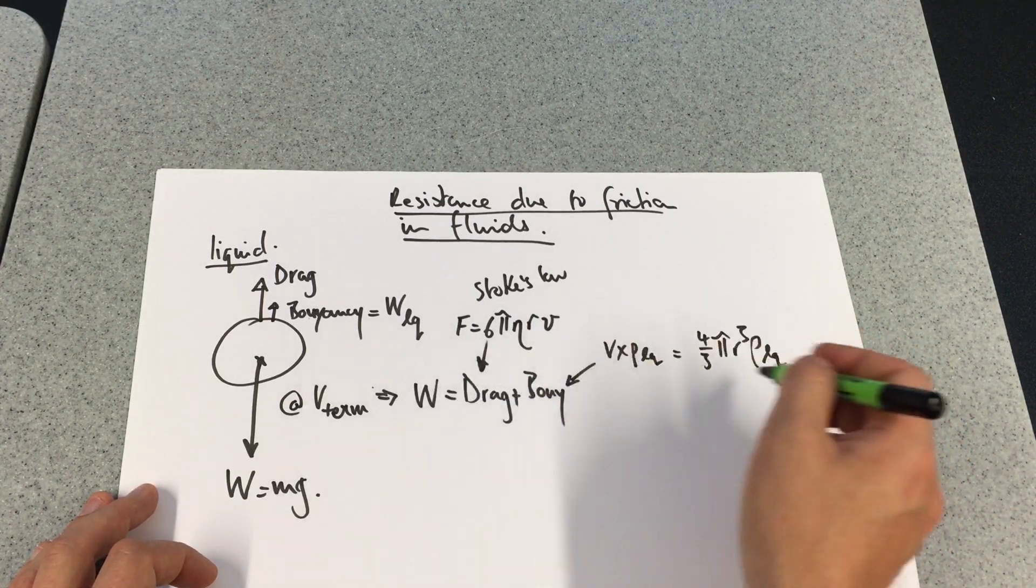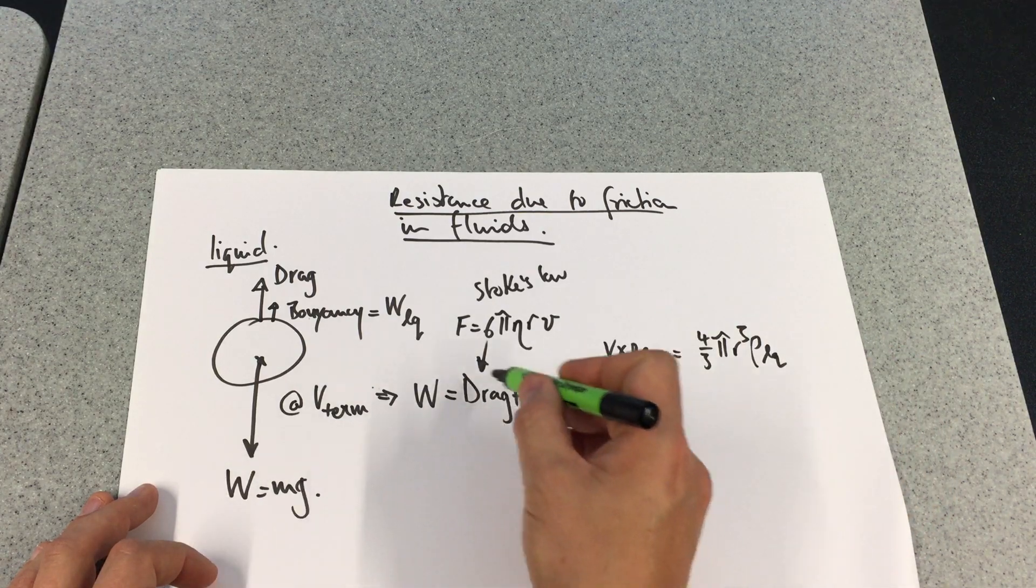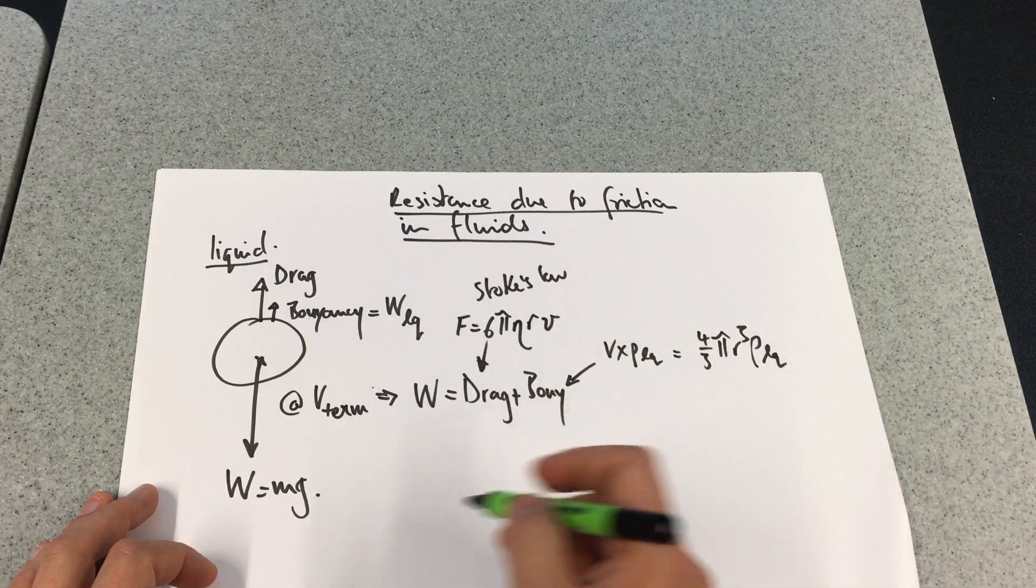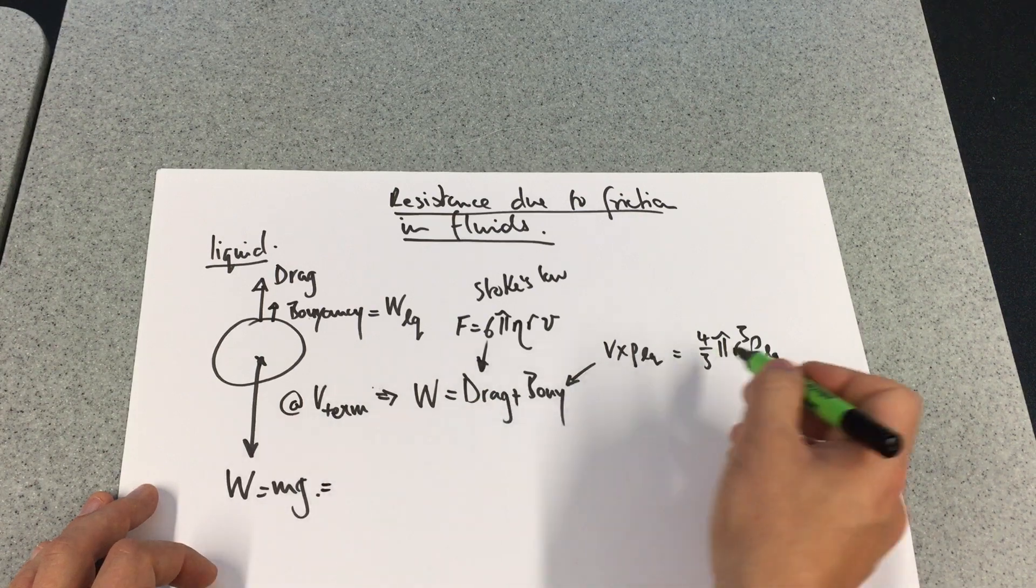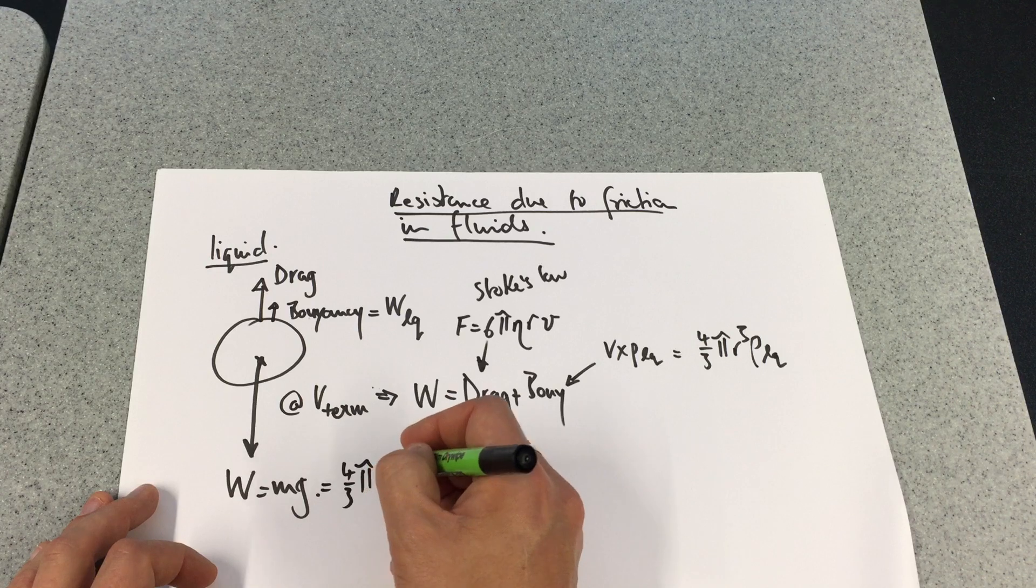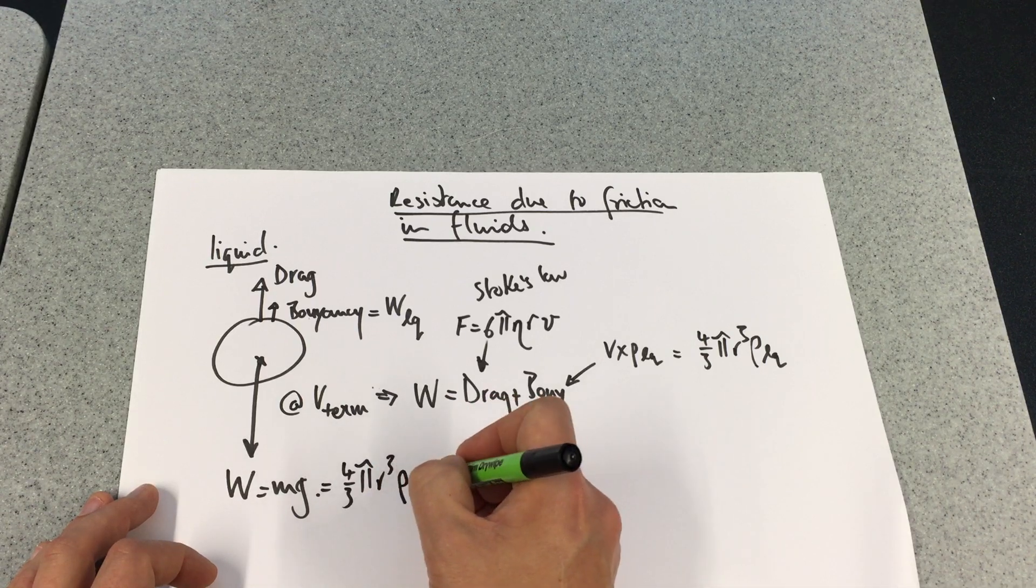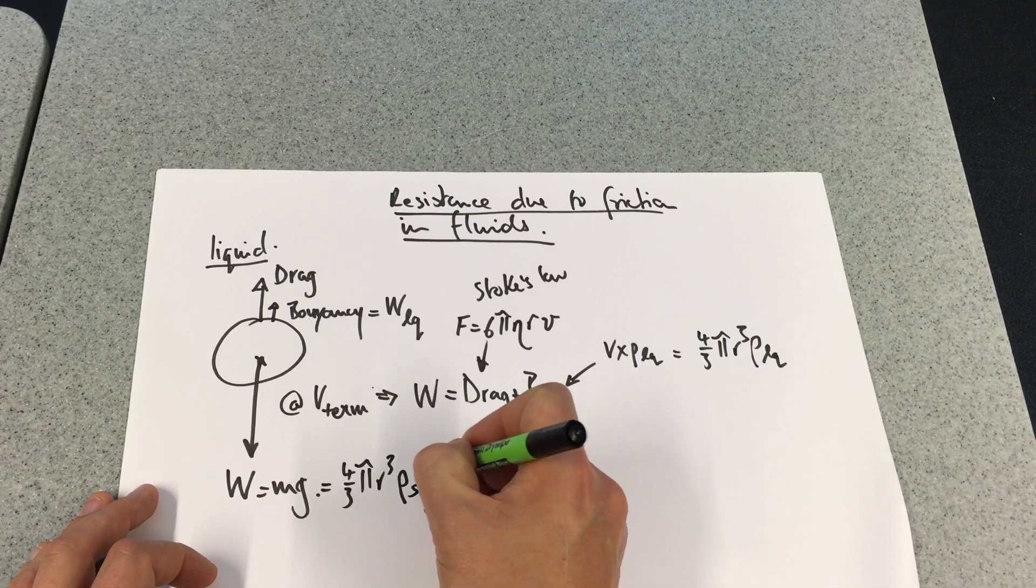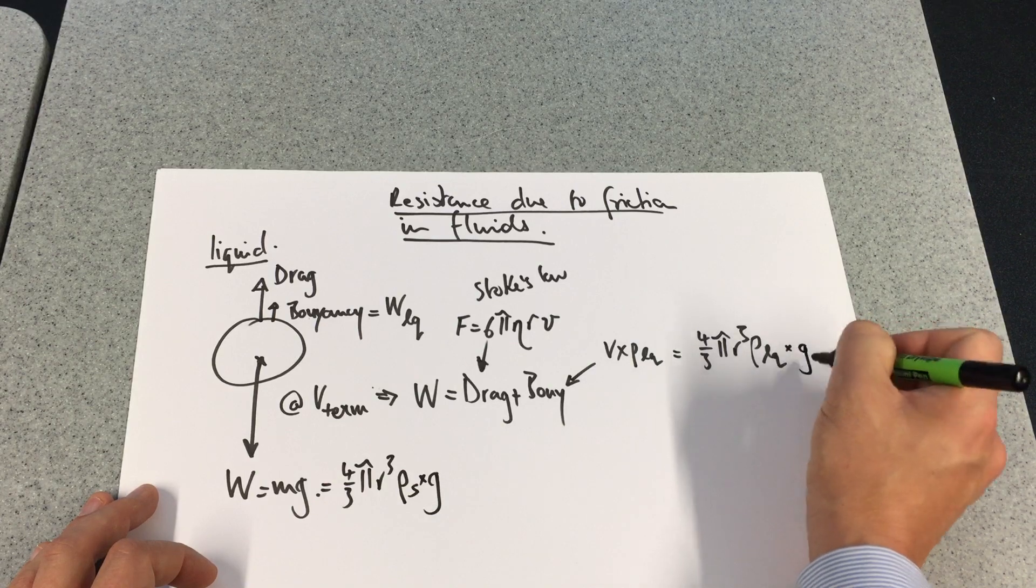So what we need to do is sum this all together, substitute in and rearrange. The weight is going to be 4/3πr³ of the steel times by g. I need to times that all by g.